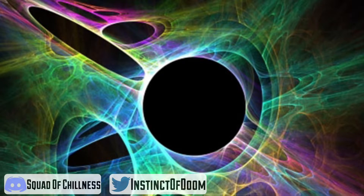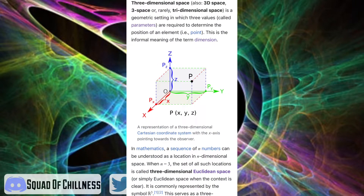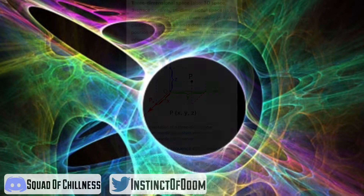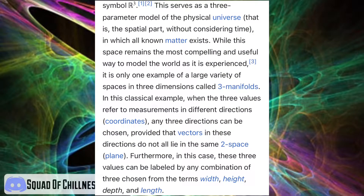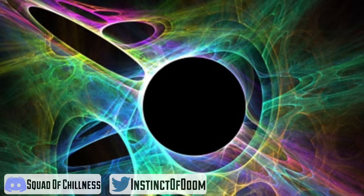The definition of a three-dimensional space is a geometric setting in which three values, called parameters, are required to determine the position of an element. All known matter exists within the observable universe. This space remains the most compelling and useful way to model the world as it is experienced, but it is only one example of a large variety of spaces in three dimensions called three-manifolds.